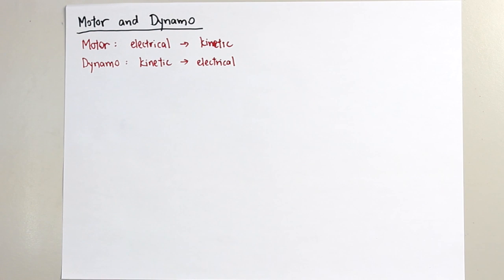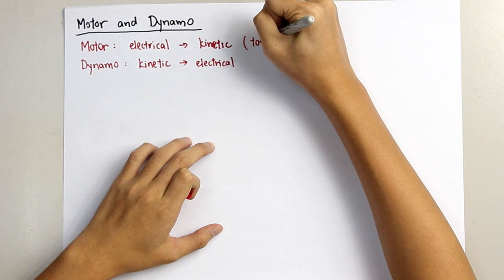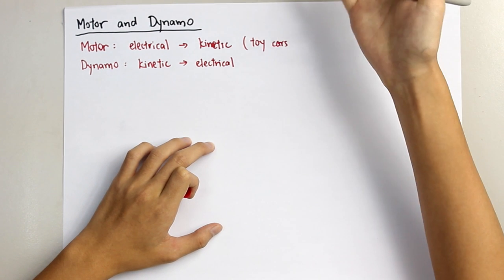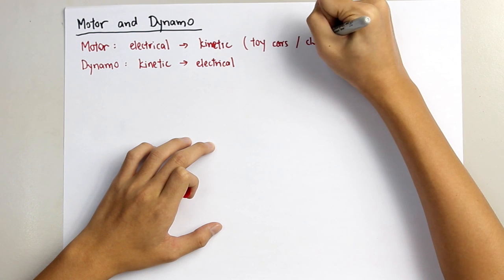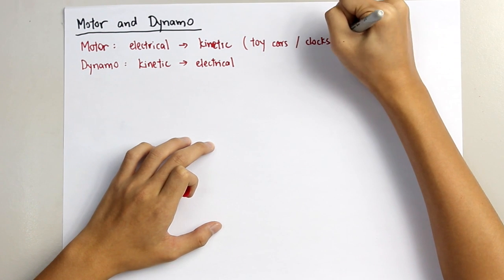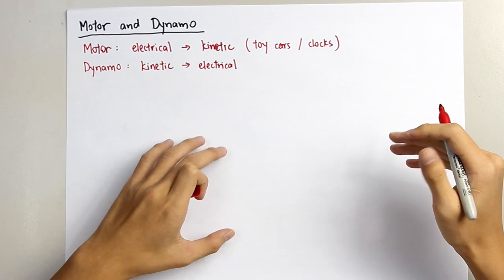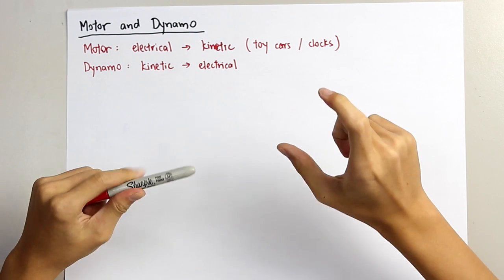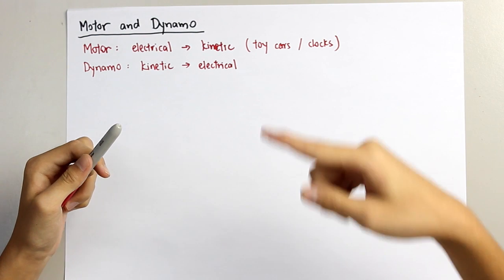We can find a motor in stuff like toy cars or clocks. In toy cars, you can see that when you insert the battery, it causes the rotation of the wheel.